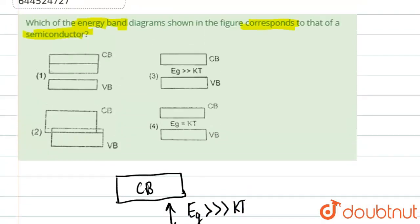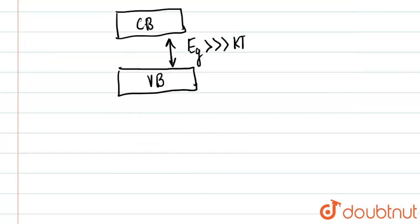So you can clearly see that basically option number 3 is for an insulator as I showed you over here because in an insulator basically doesn't conduct electricity at all.